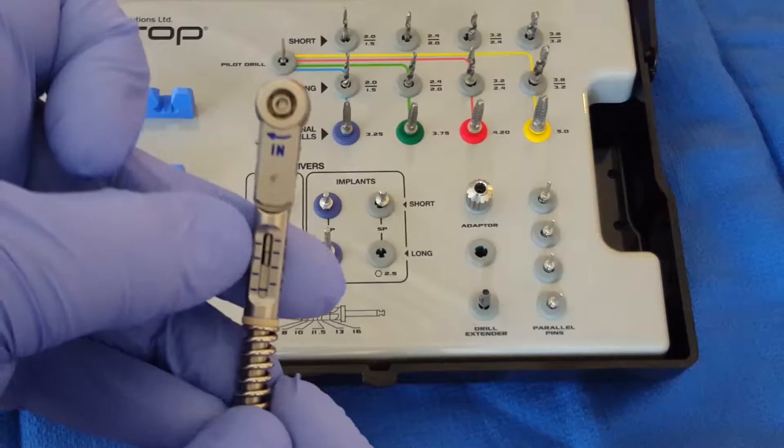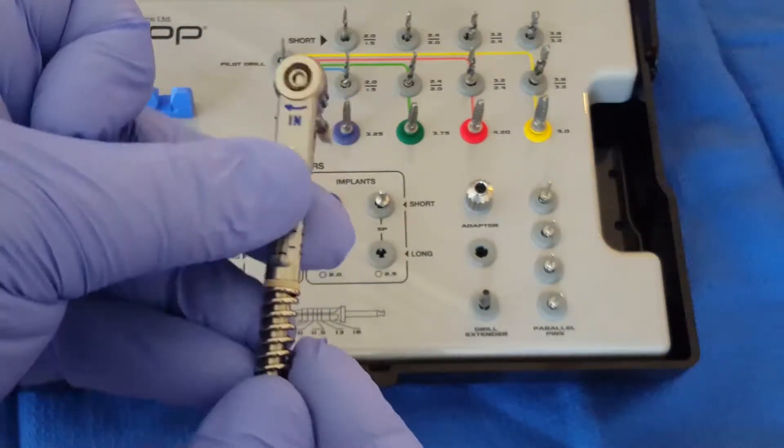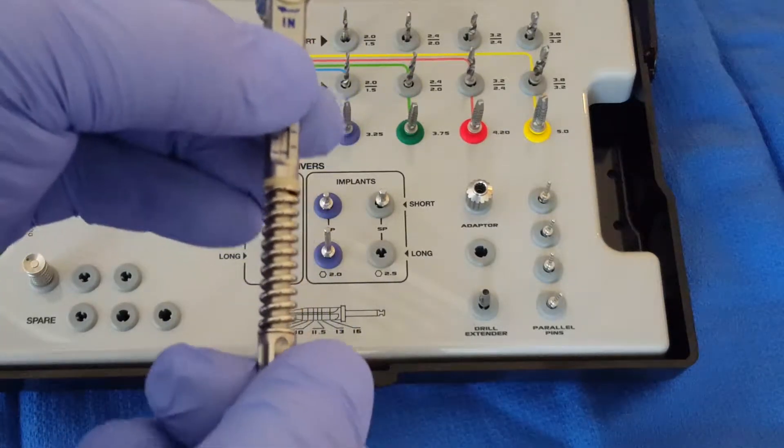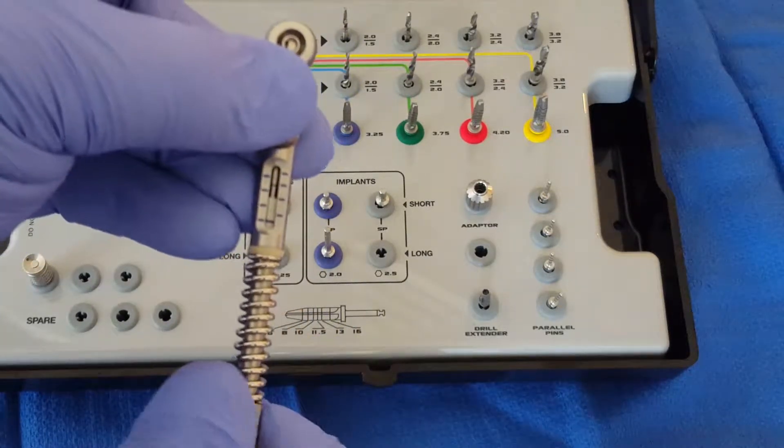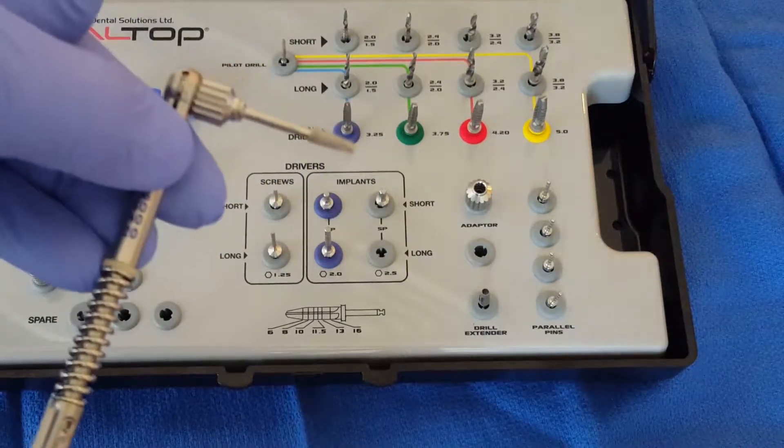We can even control the torque by adjusting the torque setting on the driver, and that's by twisting the handle. We can go ahead and set the torque driver. Everything fits securely in place, nothing is going to fall.